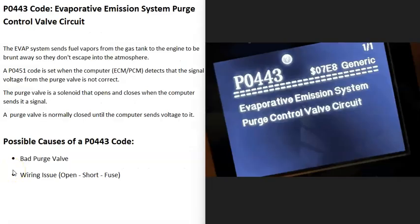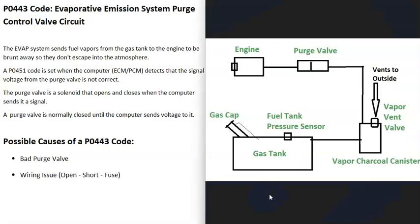Today I'm talking about a P0443 code — what it is and how you go about fixing it. The P0443 code is an evaporative emission system purge control valve circuit. Basically, vehicles have what's called an EVAP system that takes the gas vapors from the gas tank and feeds them up to the engine to be burnt away so they don't escape into the atmosphere. This is for emissions.